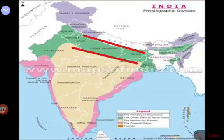The Northern Plains are physical features that are divided into four parts: Bhabar, Terai, Bangar, and Khadar.